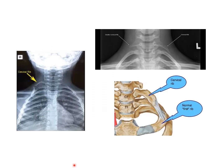Here you can see that the C7 transverse process has given rise to an extra rib called a cervical rib. The cervical rib is visible on the right side; on the left side it may also be present. The frequency of occurrence is nearly 1 in 200, and the cervical rib can result in thoracic outlet syndrome.